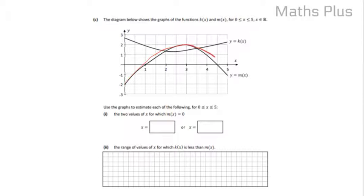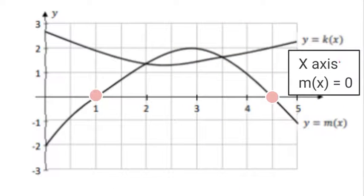So part one, we need to find the values where m of x is equal to zero. So let's zoom in on the m of x function. And where is the function equal to zero? Well, this will be on the x-axis, here and here. So we can see very clearly that the values will be 1 and 4.5.